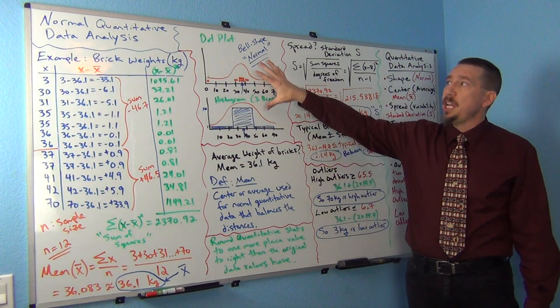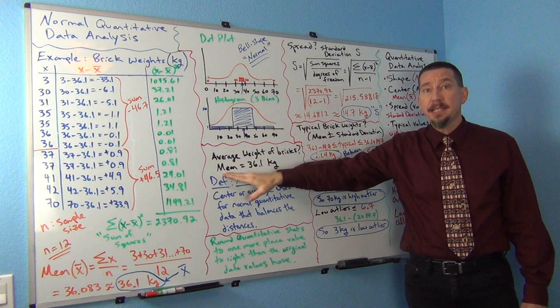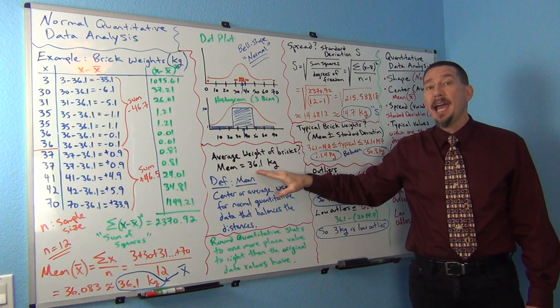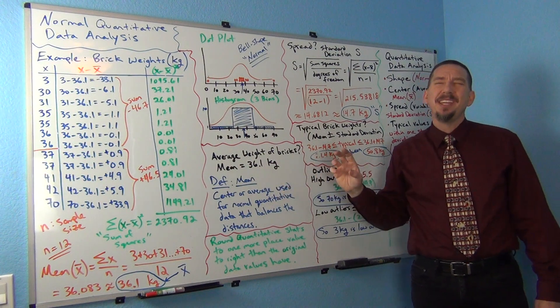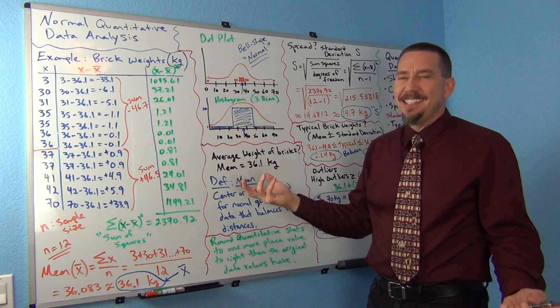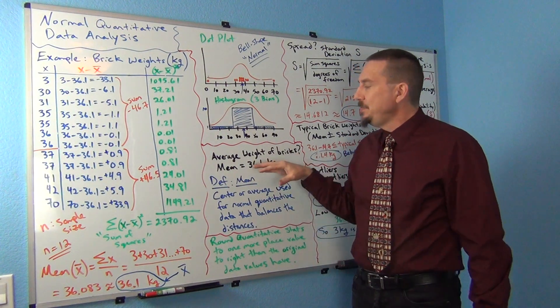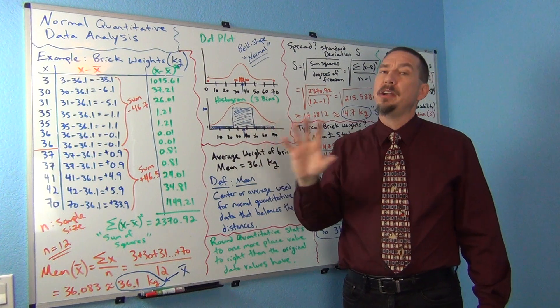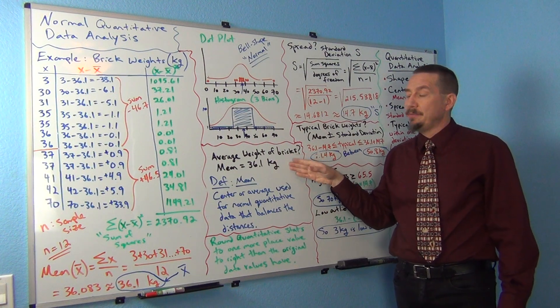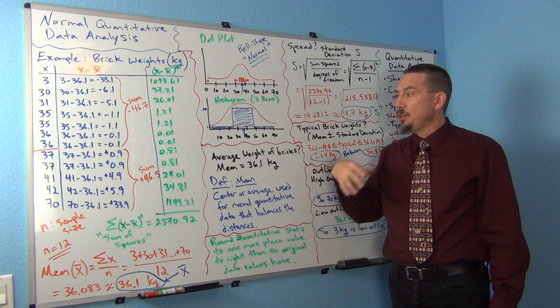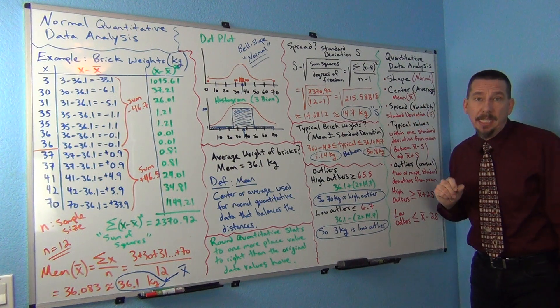So, the mean balances the distances. We've seen that the shape of this data is normal, and the average was 36.1 kilograms. But if all you do is analyze data, is take an average, you're really missing the boat. You can have different data sets that have the same average that are very different in other characteristics. We never want to just stop by looking at just the average. We want to go beyond that. One variable we really like to measure is the spread, or the amount of variability in the data set.